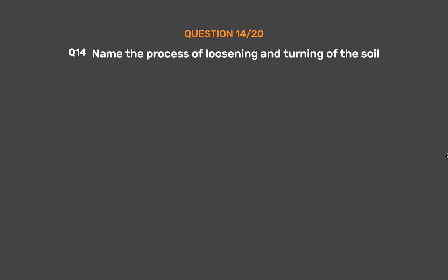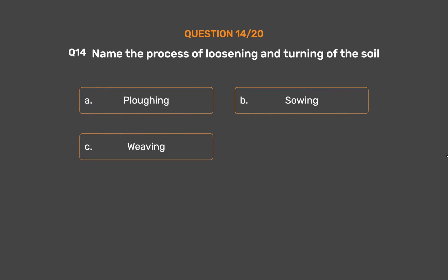Question No. 14: Name the process of loosening and turning of the soil. Option A: Plowing. Option B: Sowing. Option C: Weaving. Option D: None of these.